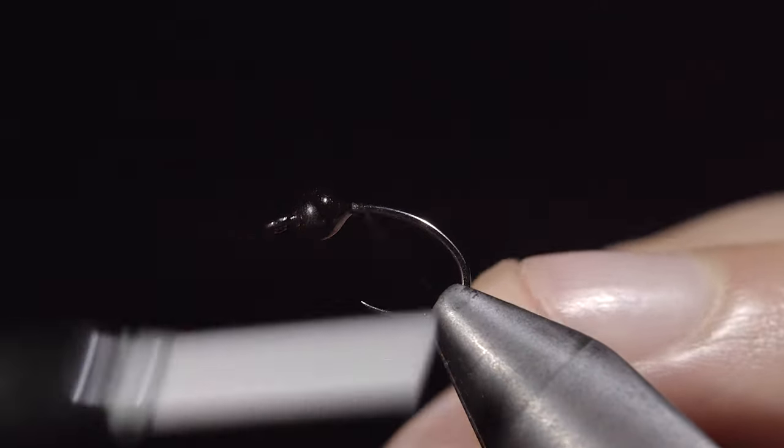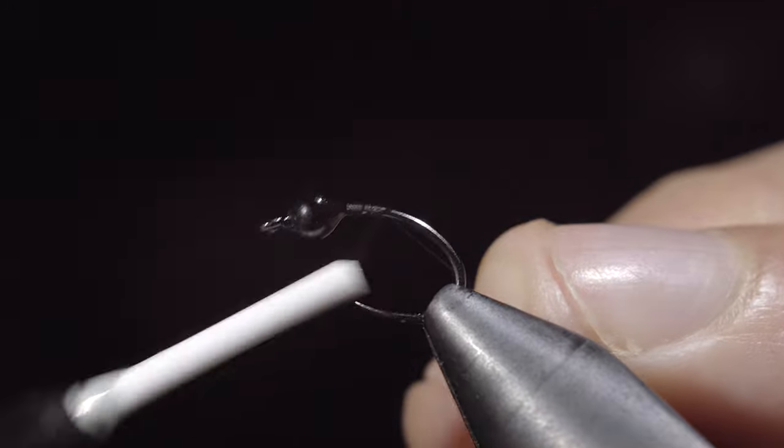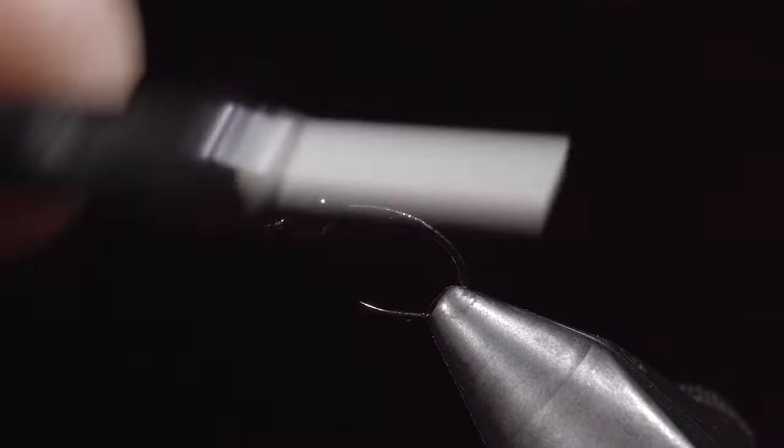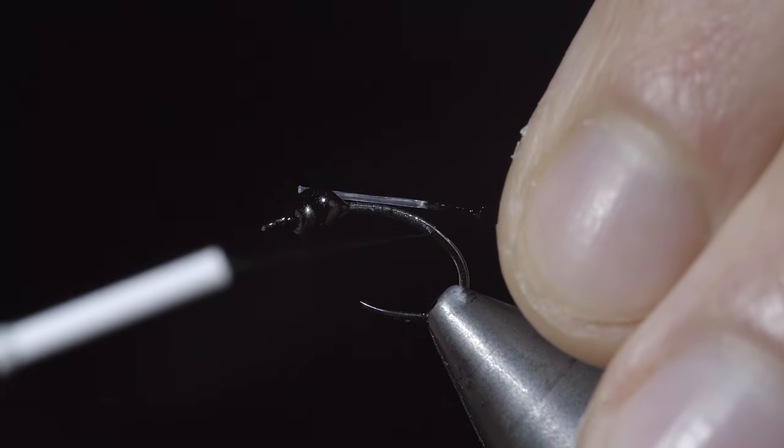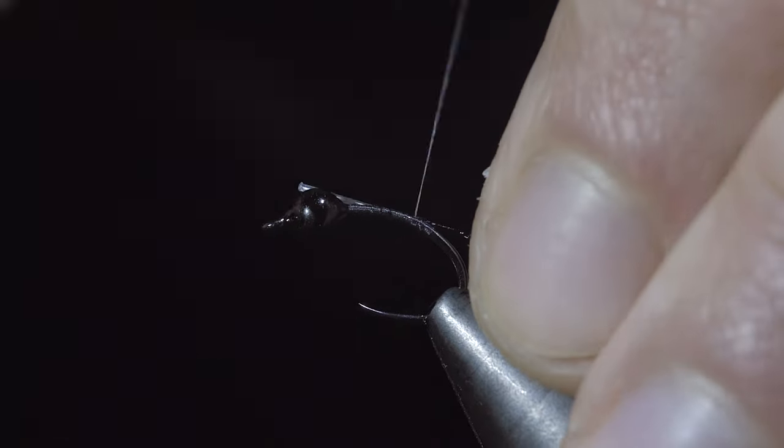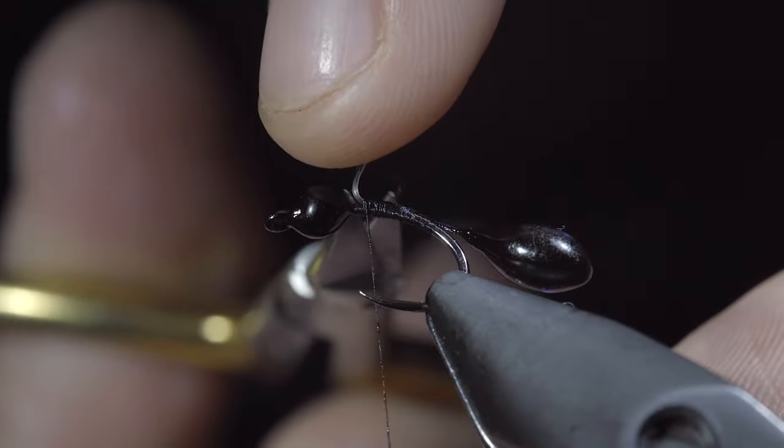We will now switch back to our Vivas thread, secure it tightly to the hook shank, snapping the excess free. Continue back slightly into the bend of our hook, securing our extended body gaster to the hook shank. Continue wrapping tightly towards the head of the fly. Once complete, snip the excess free.